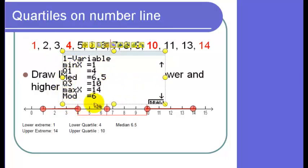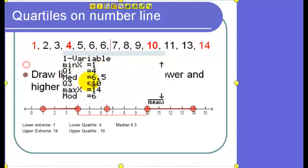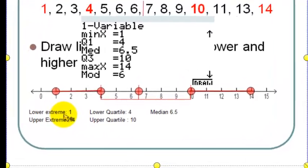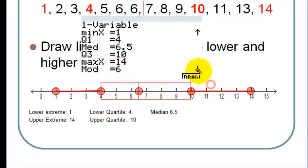These are the parts of our box and whisker plot. So the min x corresponds to your lower extreme, your Q1 is your lower quartile, your median here is 6.5, Q3 is your upper quartile, and then the max x here is the upper extreme. Once you have these numbers here, you will be able to easily graph your box and whisker plot.